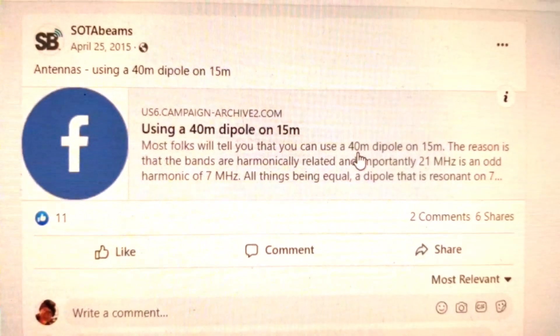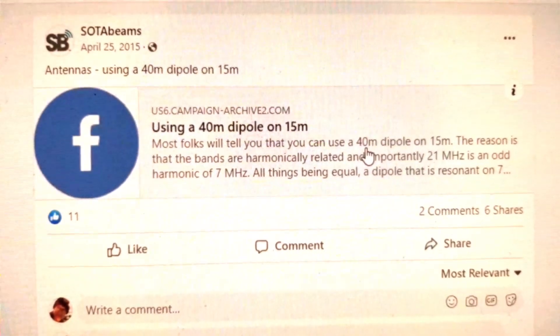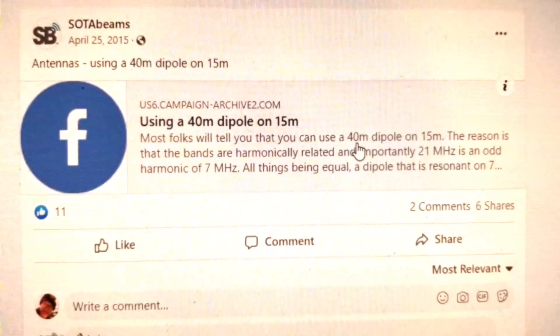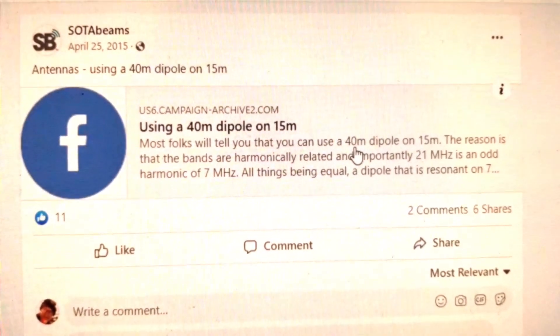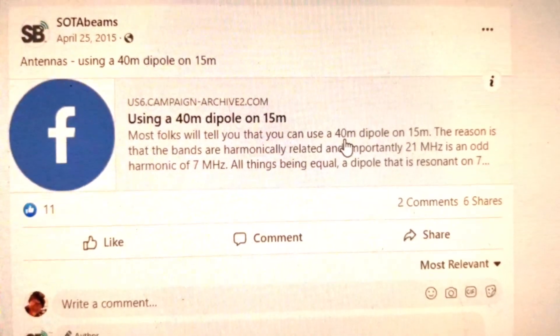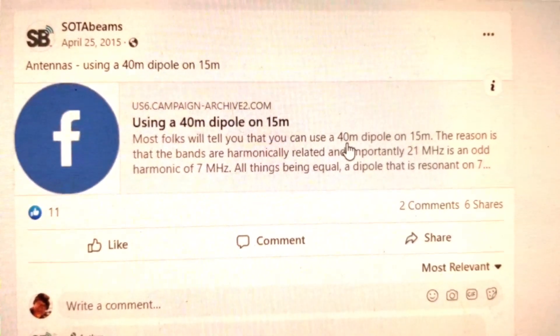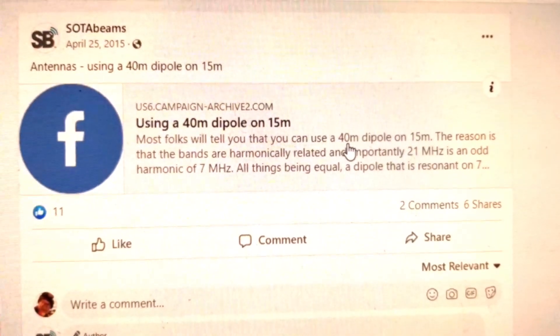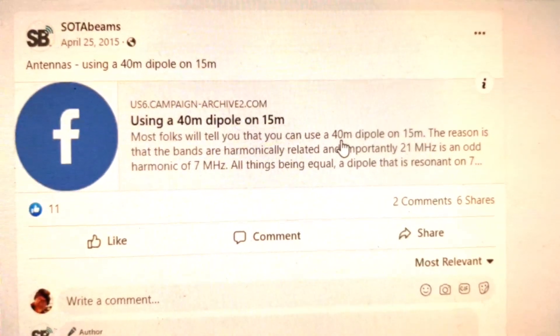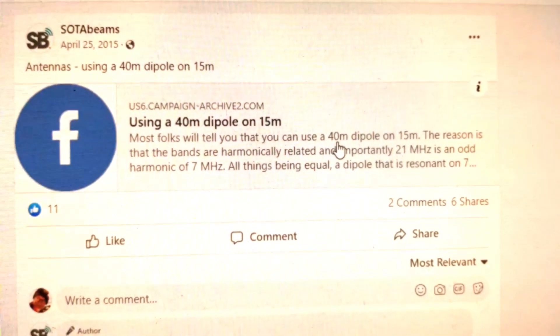A quick search on the topic turned up this page from SOTA Beams, in which they describe that a 40 meter dipole will always resonate too high on the high side of the 21 megahertz amateur band, and you will need to do something to bring its resonance down in frequency.